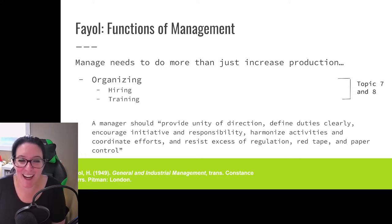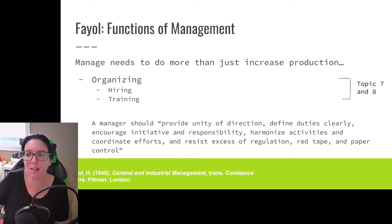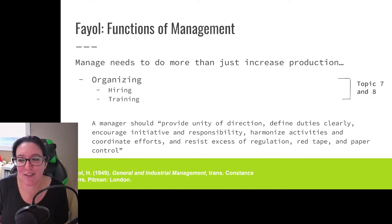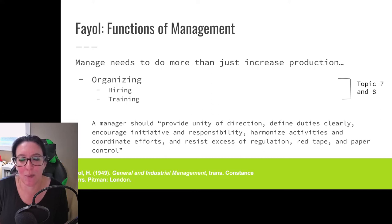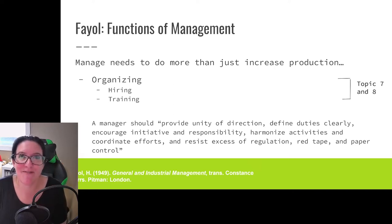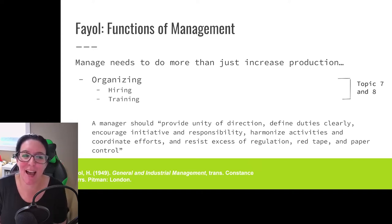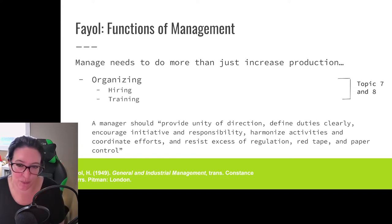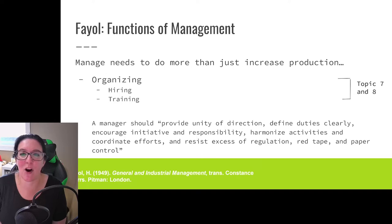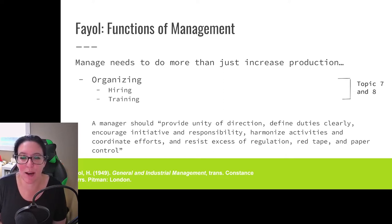We then need to organize. We need to hire, we need to train. And just like Bernard, Fayol says we need to provide unity of direction — we all need to be working towards that common cause. One way we can do that is to define duties clearly. Today, when you look at your contract for a job or a project, it clearly defines what the expectations are in terms of what you're actually supposed to do. We see an emphasis in this classical period on roles and rules, clearly defining expectations for people.